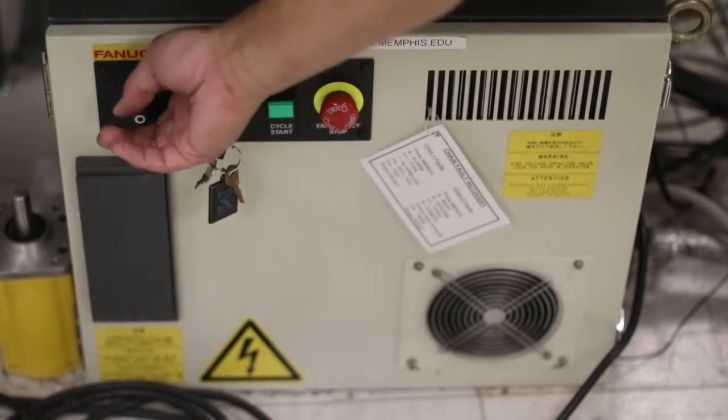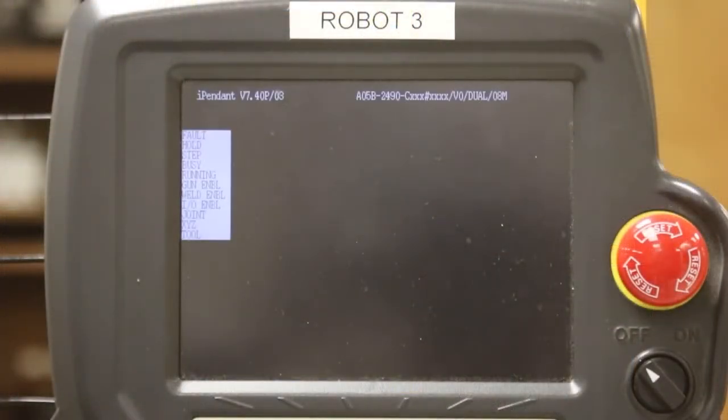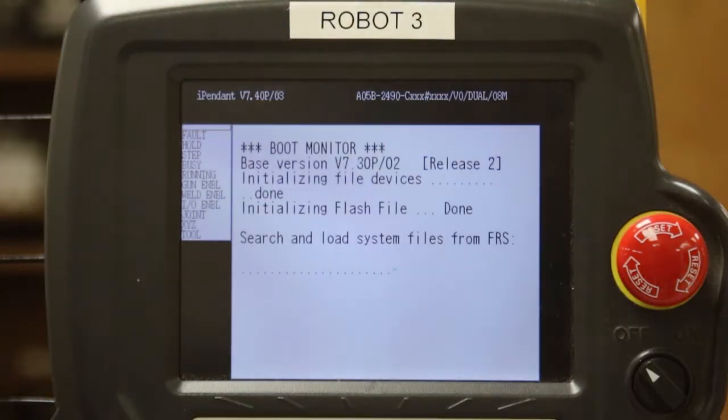To start the robot, move the switch to the on position. There is nothing to watch on the controller, so I'm just going to show the teach pendant here. As you can see, it displays the progress as the robot starts up.